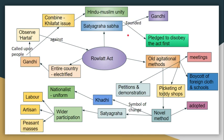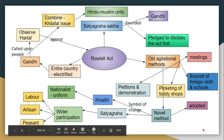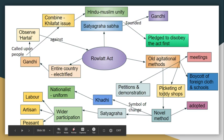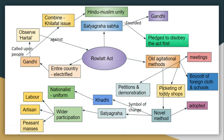The old agitation methods — meetings, burning foreign cloth, picketing of schools and toddy shops — were replaced by new methods. Other methods enabled participation of labor, artisans, and common persons. The symbol of change was Khadi — Khadi became the uniform worn by all nationalists.